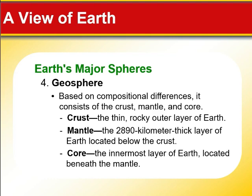From the word geosphere, it means rock. So this is the solid part of the Earth. Based on compositional differences, it consists of three major layers: the crust, the mantle, and the core. The core is further divided into two major sub-layers — the outer and the inner core. As we go deeper into the Earth's solid part, the temperature is increasing. The thinnest part is the crust, followed by the mantle where most underground activities are occurring, and finally the core.